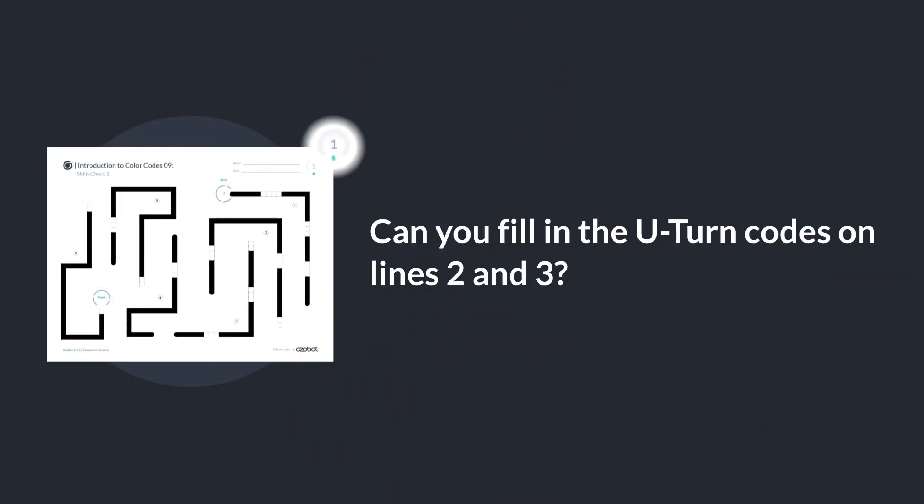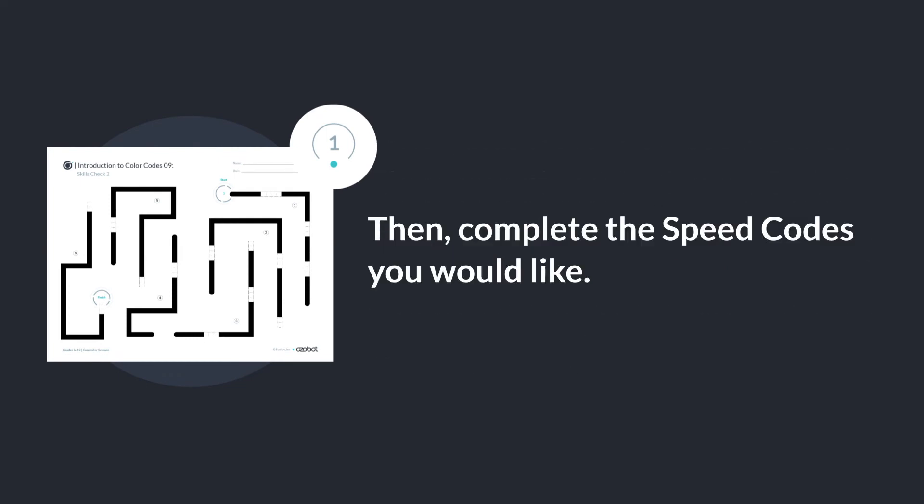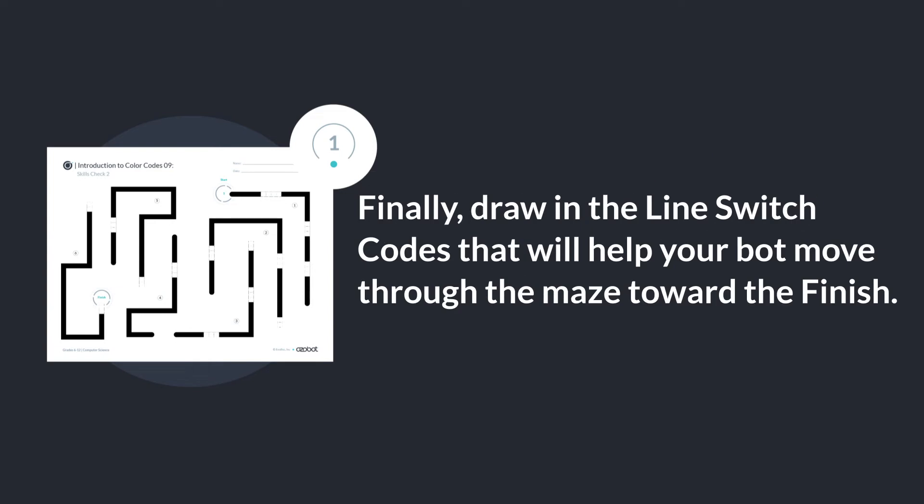Can you fill in the U-turn codes on lines two and three? Then complete the speed codes you would like. Finally, draw in the line switch codes that will help your bot move through the maze toward the finish.